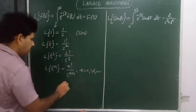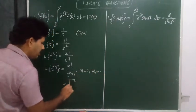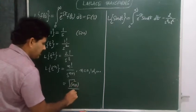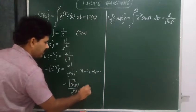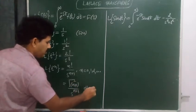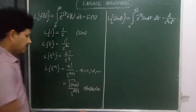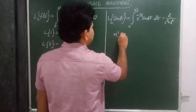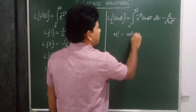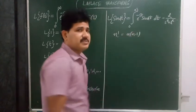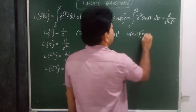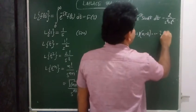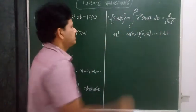Otherwise, you have gamma of n plus 1 upon s to the power n plus 1. Now, n factorial is defined as n times of n minus 1 times of n minus 2, and proceeding in this way, 3 times of 2 times of 1.